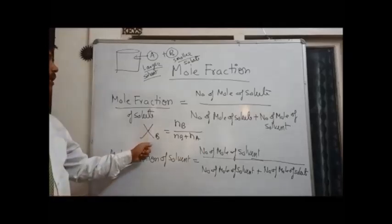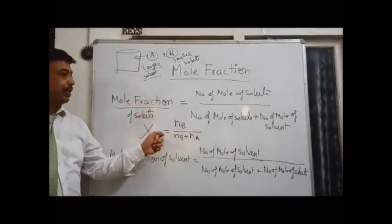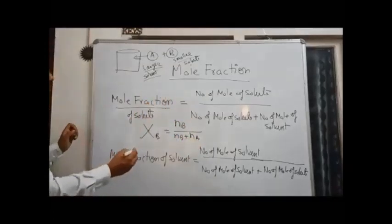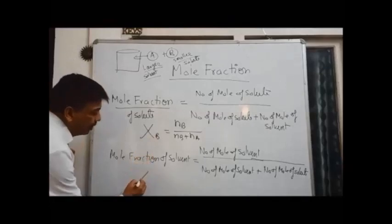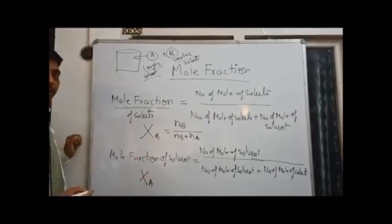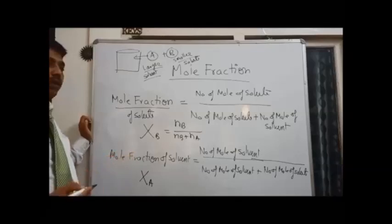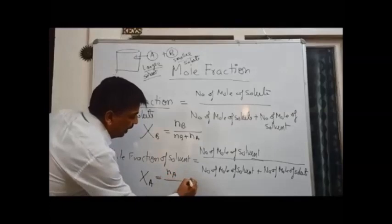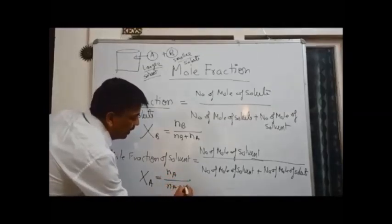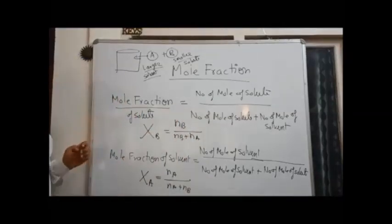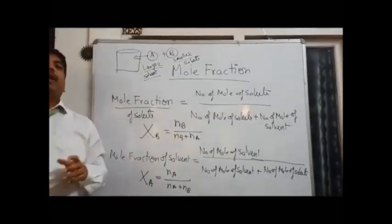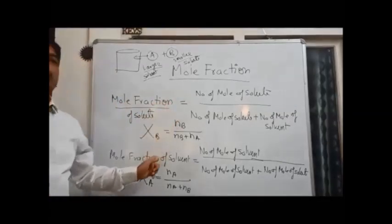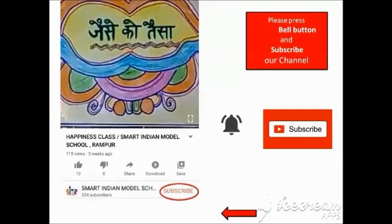So basically chi B, the mole fraction of solute, is equal to N sub B upon N sub B plus N sub A. Similarly, mole fraction of solvent can be written as chi A or X sub A, which is equal to number of moles of solvent divided by number of moles of solvent plus number of moles of solute. This is a very simple way to express the mole fraction of solute and mole fraction of solvent.